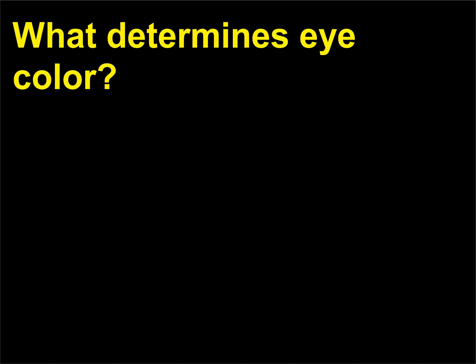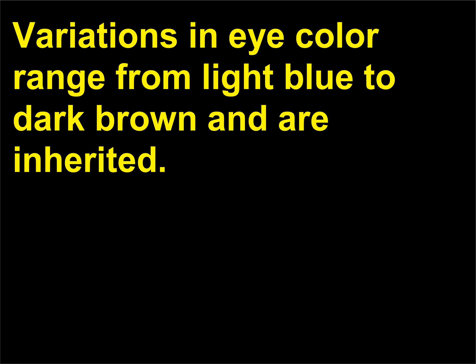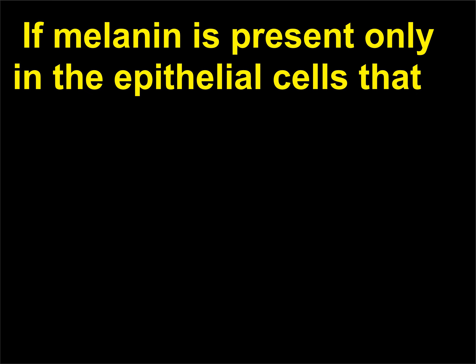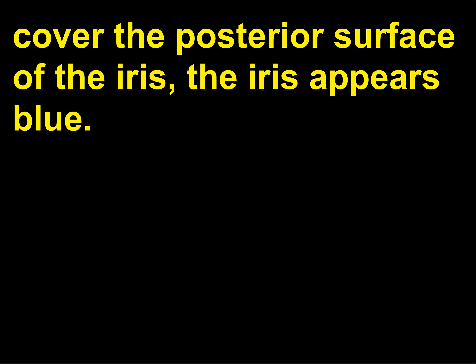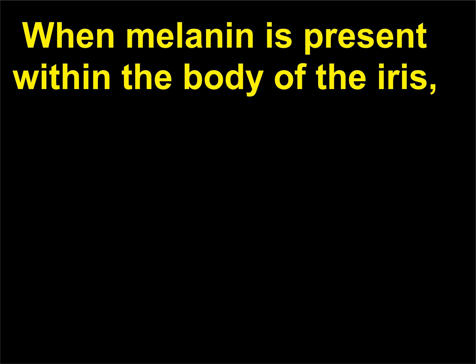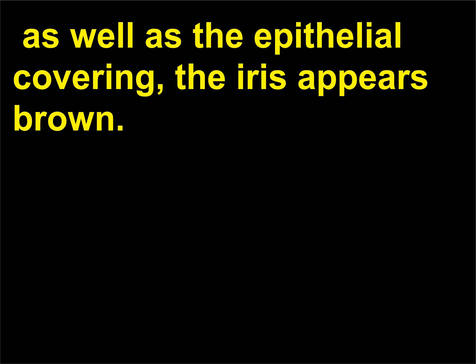Variations in eye color range from light blue to dark brown and are inherited. Eye color is chiefly determined by the amount and distribution of melanin within the irises. If melanin is present only in the epithelial cells covering the posterior surface of the iris, the iris appears blue. When this condition exists together with denser-than-usual tissue within the body of the iris, the eye color looks gray. When melanin is present within the body of the iris as well as the epithelial covering, the iris appears brown.